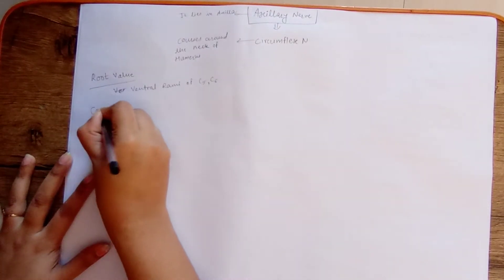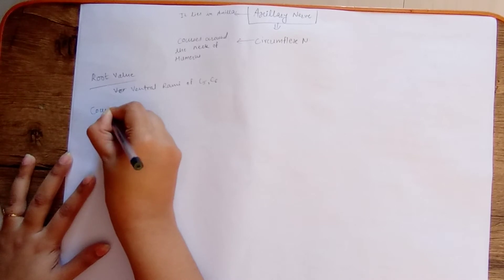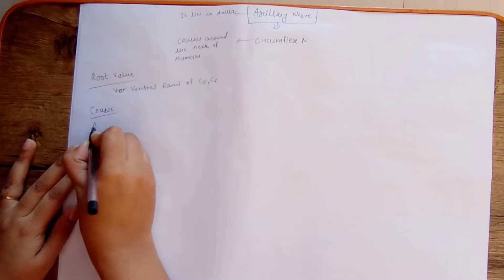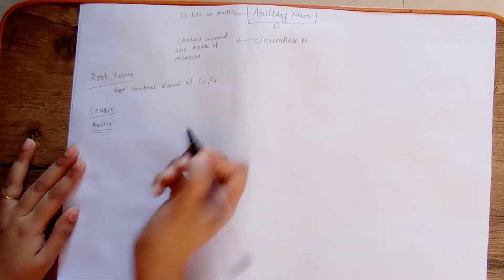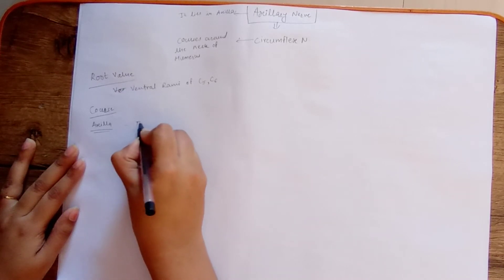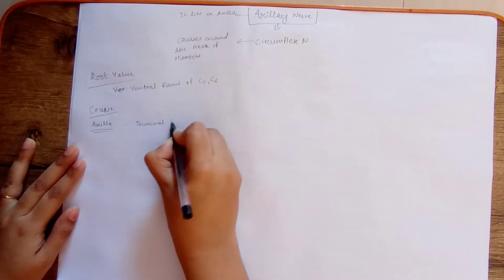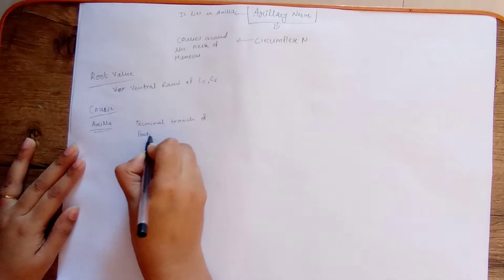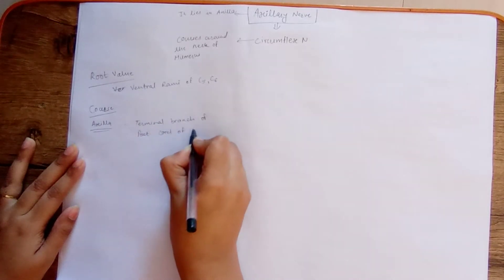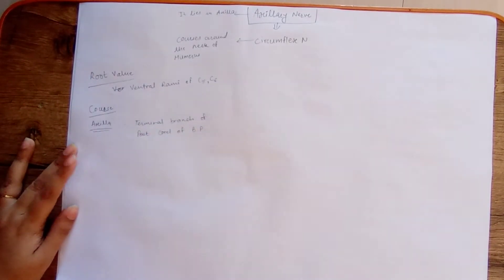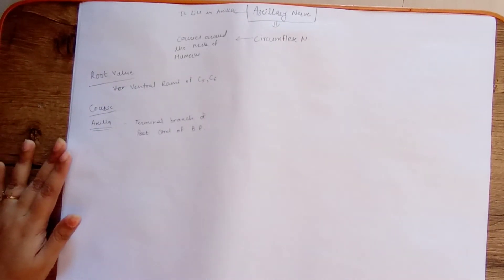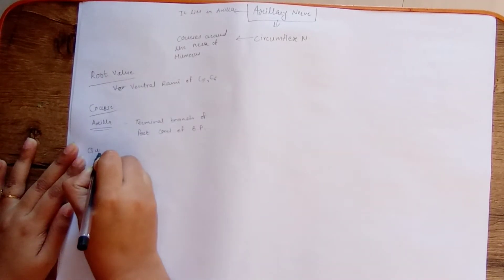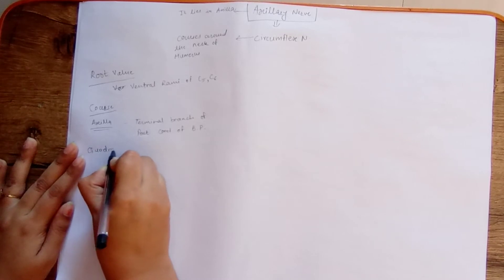Then, regarding its cord: in the axilla, it arises as the small terminal branch of the posterior cord of the brachial plexus. It then passes through the quadrangular space.